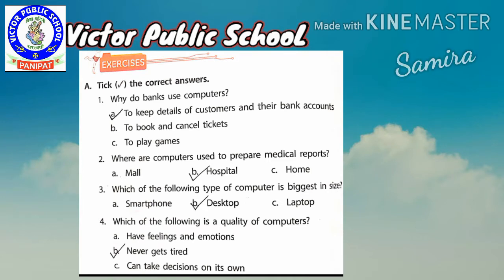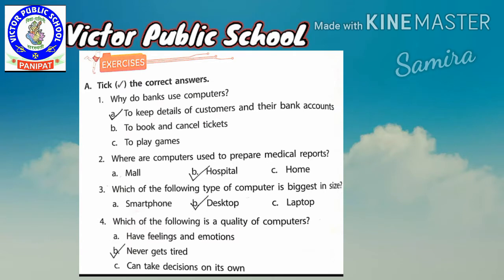Option B: to book and cancel tickets — for any ticket to book or cancel. Option C: to play games. So let's start with A: to keep details of customers and their bank accounts.